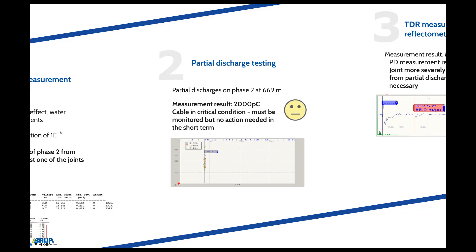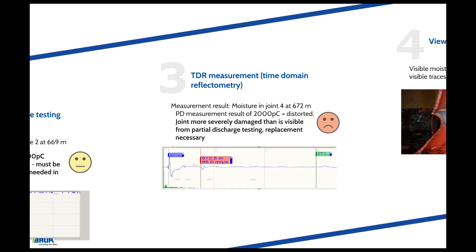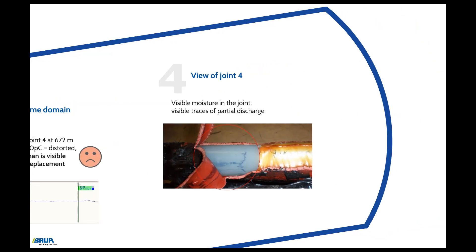Only by overall consideration of the results, together with the dissipation factor measurement, can the condition of the cable be determined. The TDR measurement, which is also used for the location of damp joints, shows that the moisture in joint 4 lies at 672 m. The fault location identified in the example coincides with that from partial discharge testing. The partial discharge measurement of 2000 pC is therefore a distorted result caused by the moisture in the joint. The joint is more severely damaged than can be seen from the partial discharge testing and should be replaced immediately to prevent a failure during operation. The subsequently exposed joint exhibits clear traces of partial discharges as well as moisture, confirming that the decision to replace the joint immediately was appropriate.